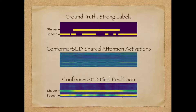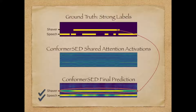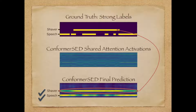In scenarios with overlapping sounds of different durations, we observed that although the actual events were correctly classified by the Conformer-SED, the temporal boundaries of one of the events is typically blurred across time. In this specific example of speech overlapping with sound of an electric shaver, speech is precisely detected and segmented while electric shaver is not.